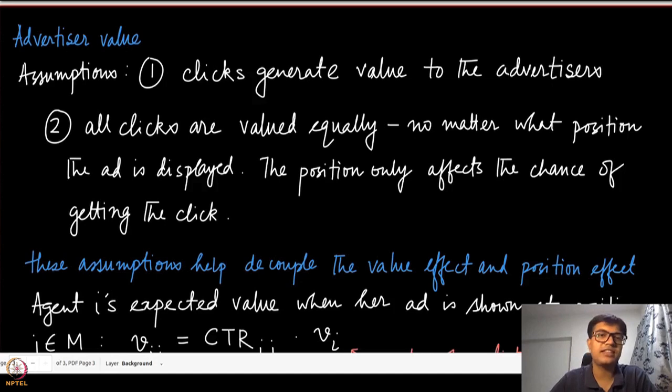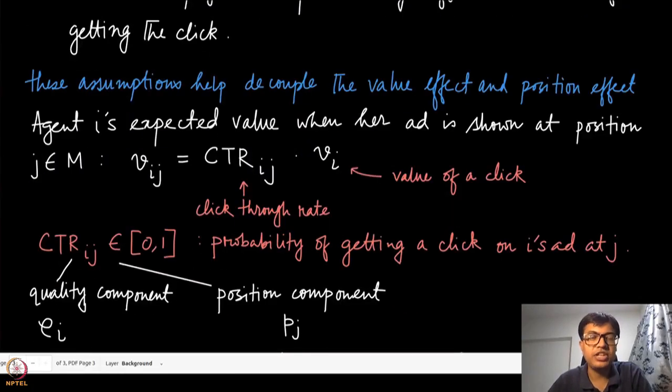We make a few assumptions on the advertiser's valuation. First, clicks generate value to the advertisers. When someone is clicking and going to their website, it certainly gets some amount of value. But all clicks are valued equally. From the advertiser's side, it doesn't matter whether the click came from the first slot or the last slot. The position only affects the chance of getting a click, it does not change the value.